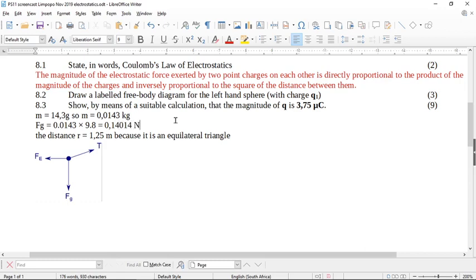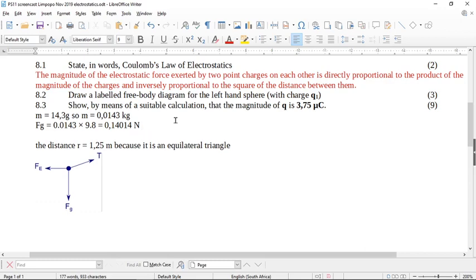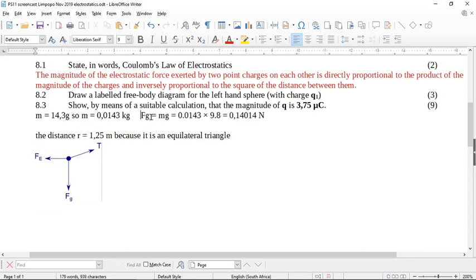We get 0.14014. Now I'm leaving it like this, because we can't round off this early in the question. So okay, so now I've found Fg. So all of these steps, they're not immediately telling you this show by means of a suitable calculation. But if you show all of this working, you can get your part marks. Look, this is nine marks. So put everything you know in a calculation and explain it, and you can get marks. So we should actually put the formula here, Fg equals Mg. So now we've got Fg downwards. Can we calculate T?